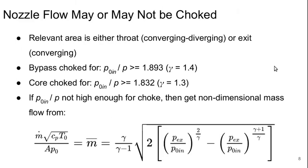Now moving downstream to the nozzle, the nozzle may or may not be choked. The relevant area if we're dealing with a converging diverging nozzle is the throat or the exit for a converging nozzle such as the ones we've considered so far.